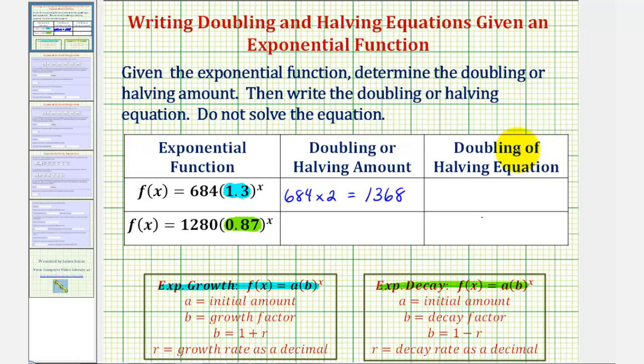And now to set up the doubling equation, we'll replace the function value of the output with 1,368. So the doubling equation would be 1,368 equals 684 times 1.3 raised to the power of x.